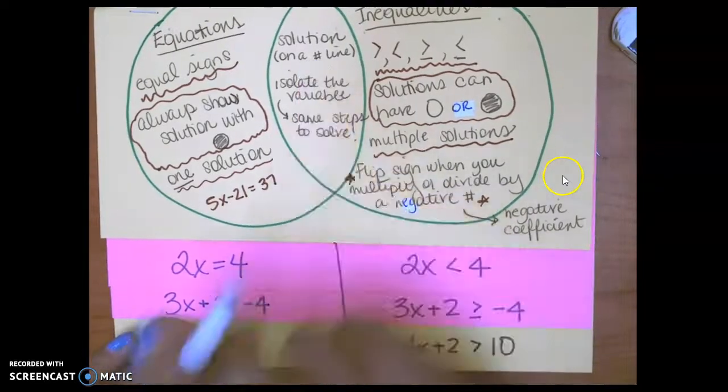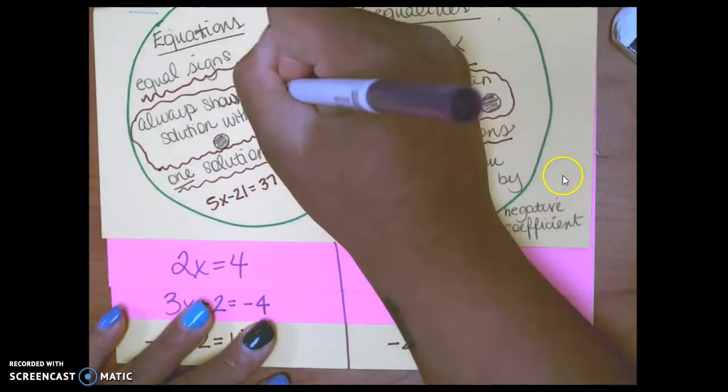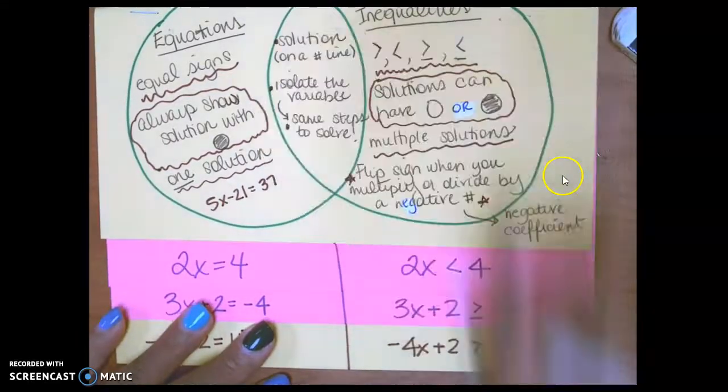The things that they have in common is that the solution's on a number line, and we isolate the variable using the same steps to solve.